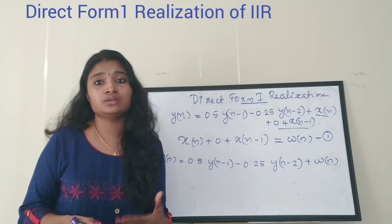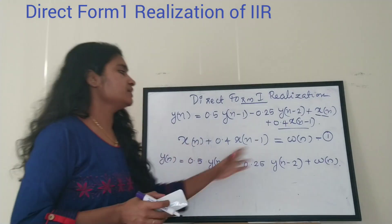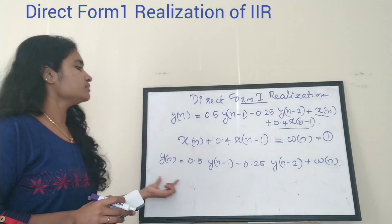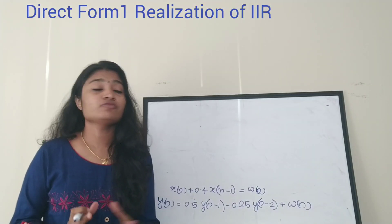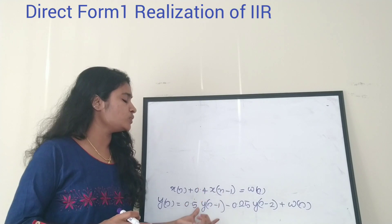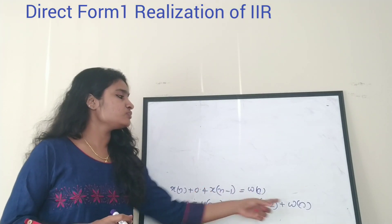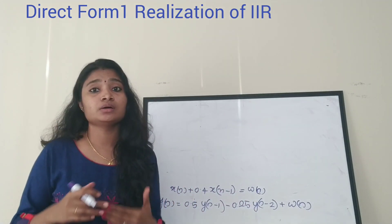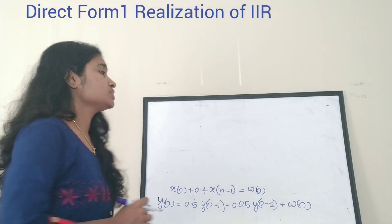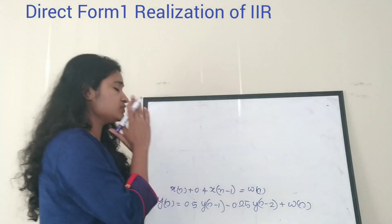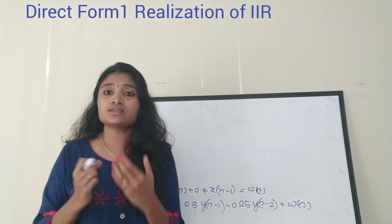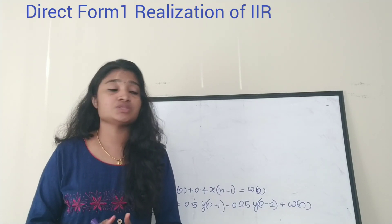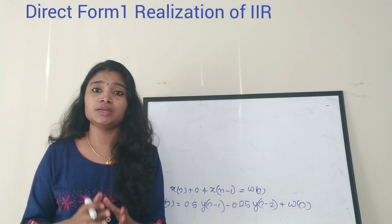We are going to realize these two equations: the equation for y(n) and the equation for w(n) in terms of x(n). First we will realize w(n), then we will realize the rest. Before drawing the block diagram, understand that x(n) is the input, y(n) is the output, and w(n) is the intermediate variable.